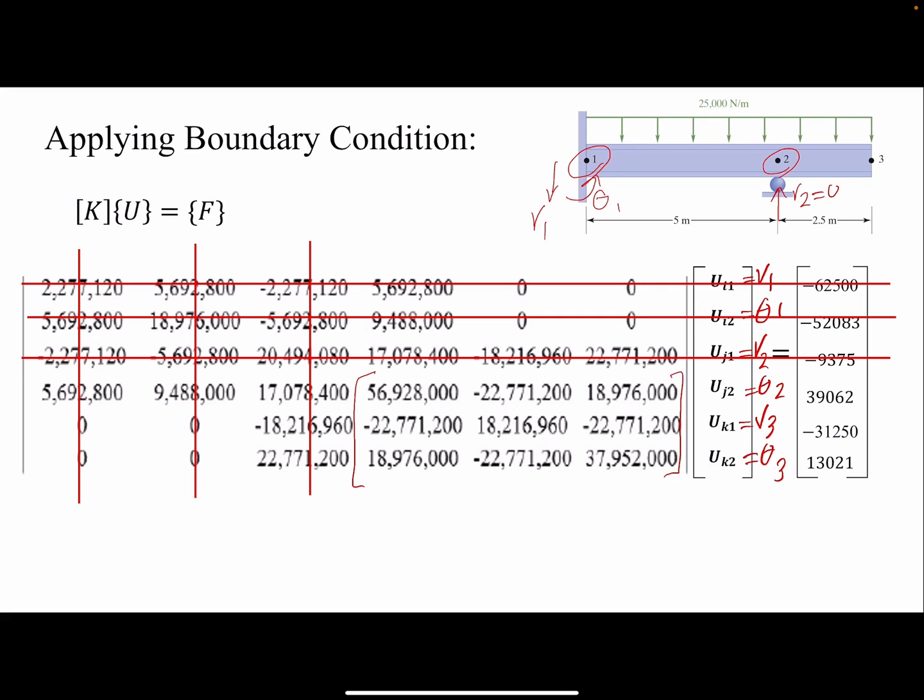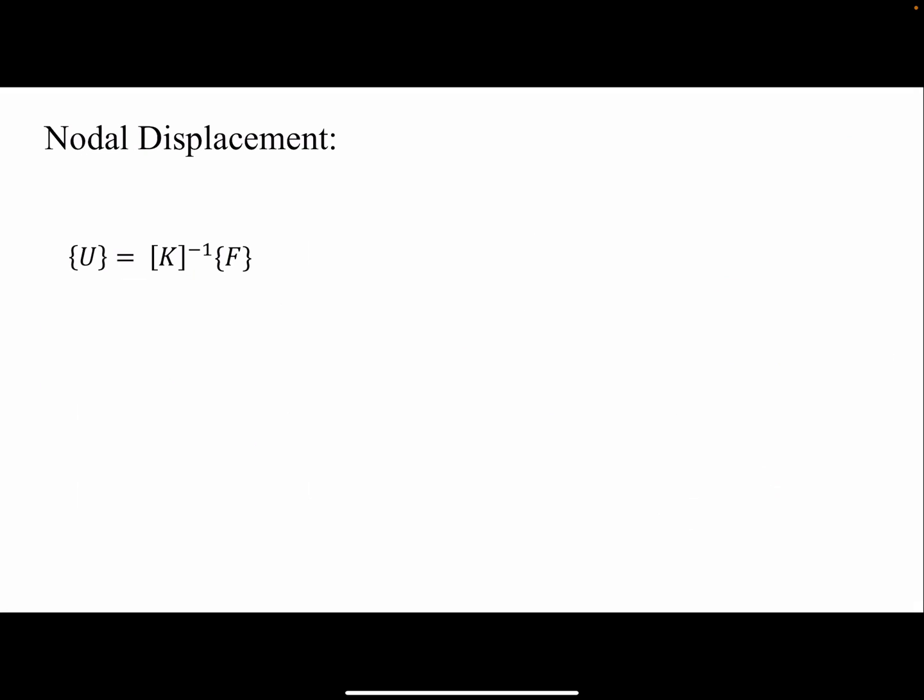We can find the nodal variables. To find the nodal displacement, u is K inverse of F. So we get the nodal variables, which this one is associated with theta 2, this is v3, and theta 3. These were the remaining nodal variables that were not zero.